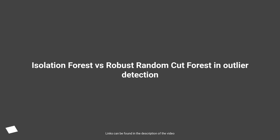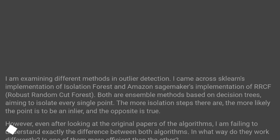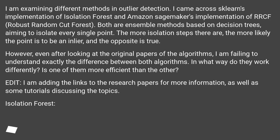Isolation Forest vs. Robust Random Cut Forest in Outlier Detection. I am examining different methods in outlier detection. I came across scikit-learn's implementation of Isolation Forest and Amazon SageMaker's implementation of RRCF, Robust Random Cut Forest. Both are ensemble methods based on decision trees, aiming to isolate every single point. The more isolation steps there are, the more likely the point is to be an inlier, and the opposite is true. However, even after looking at the original papers of the algorithms, I am failing to understand exactly the difference between both algorithms.